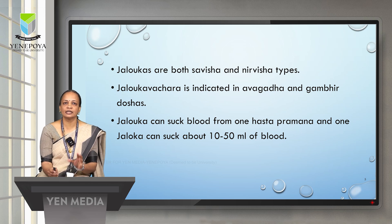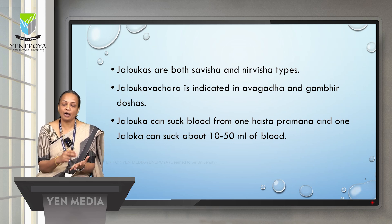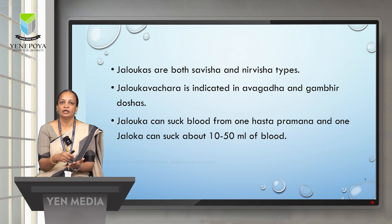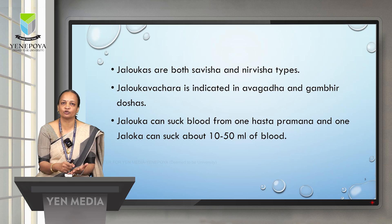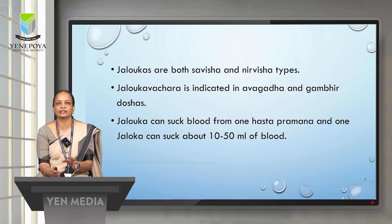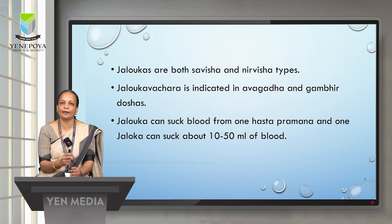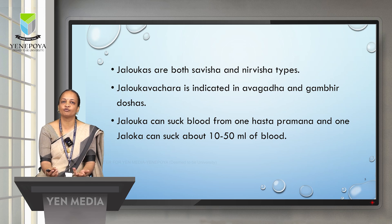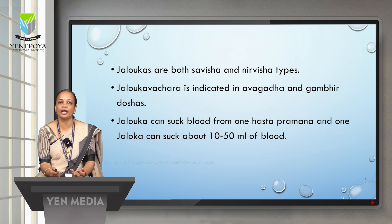One Jaloka can suck blood from one destined place. For example, if the palm is having some problem and we apply a Jaloka, it can extract the vitiated doshas from one hasta-pramana area and suck approximately 10 to 50 ml of blood. Depending on how much the disease has affected the area, 3 to 4 Jalokas can be applied at a time.